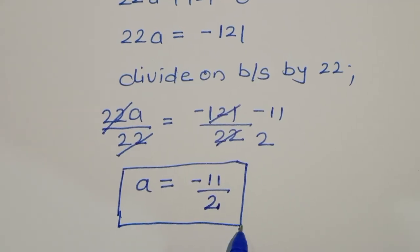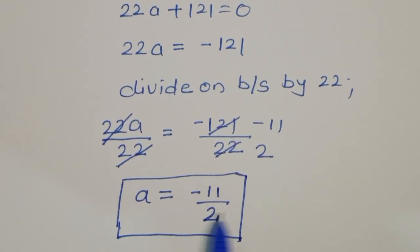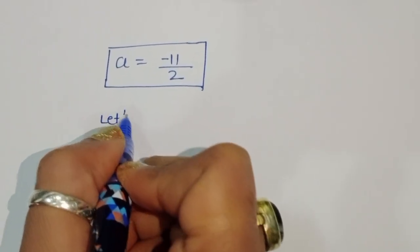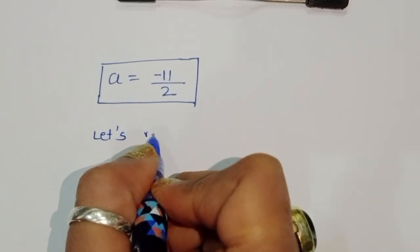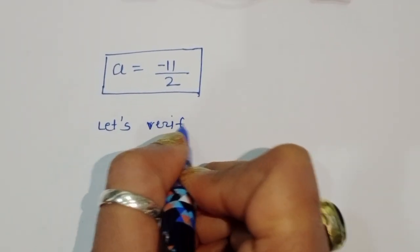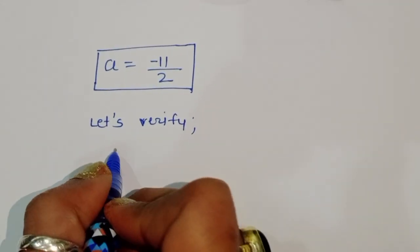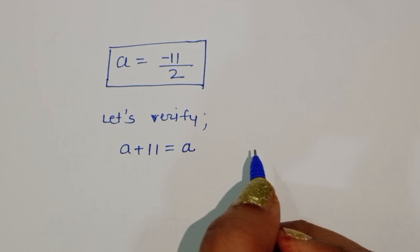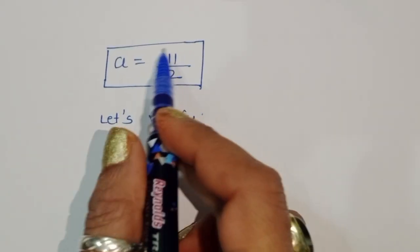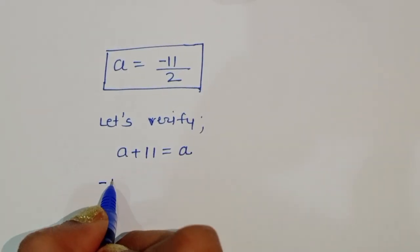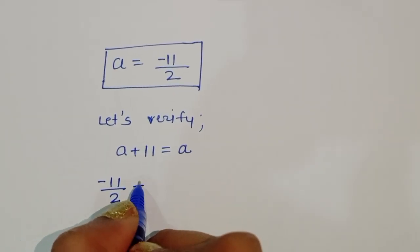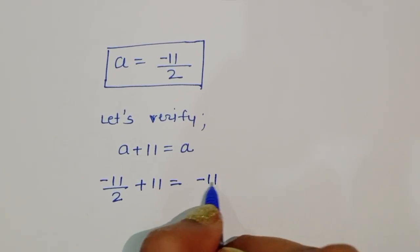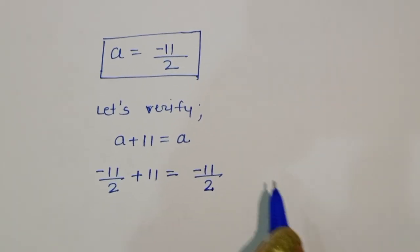Now let's verify this. Substituting a = -11/2 into the original equation: √(-11/2 + 11) = √(-11/2). On the left side, taking the LCM of 2: (-11 + 22)/2 = -11/2.